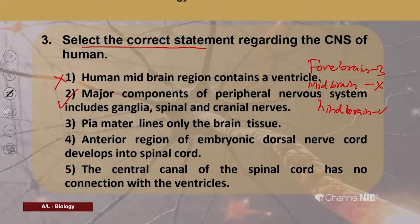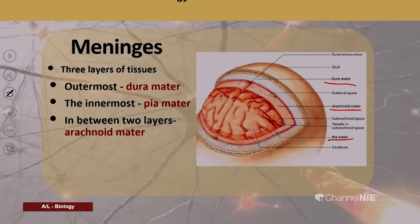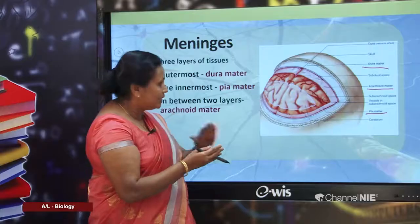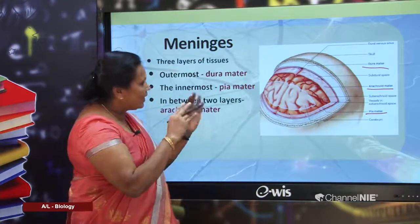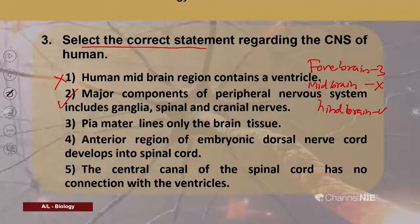Third option: pia mater lines only the brain tissue. Looking at the diagram, the three meningeal layers are: dura mater, arachnoid mater, and pia mater. The pia mater is just outside the nervous tissue and lines not only the brain but also the spinal cord. Therefore, 'pia mater lines only the brain tissue' is wrong.